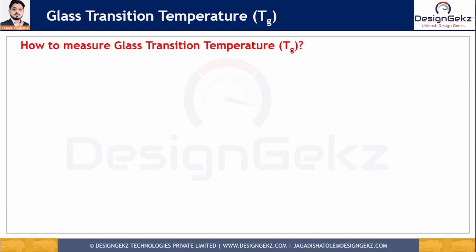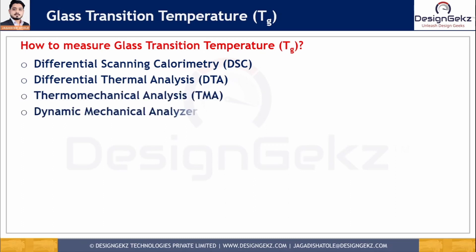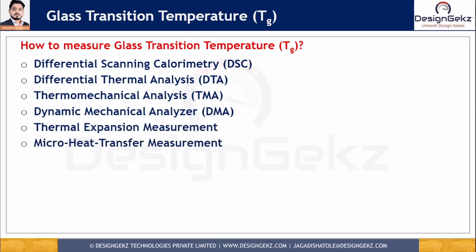How can we measure the glass transition temperature? There are different methods: differential scanning calorimetry (DSC), differential thermal analysis (DTA), thermomechanical analysis (TMA), dynamic mechanical analyzer (DMA), thermal expansion measurement, and micro heat transfer measurement. DSC and DTA are the most standard thermal methods widely used to determine Tg.